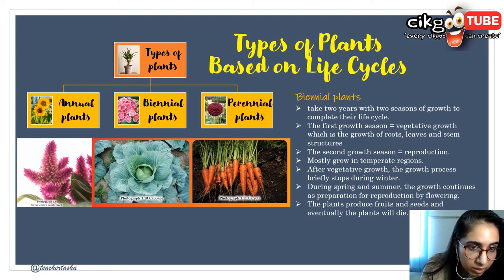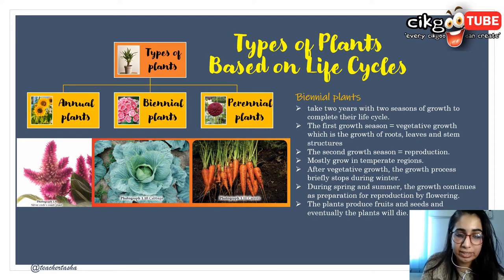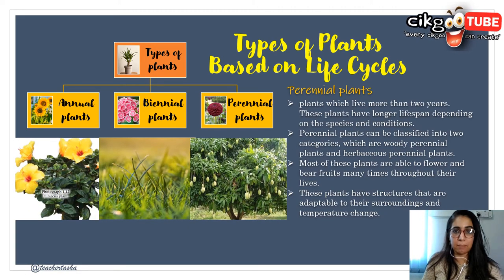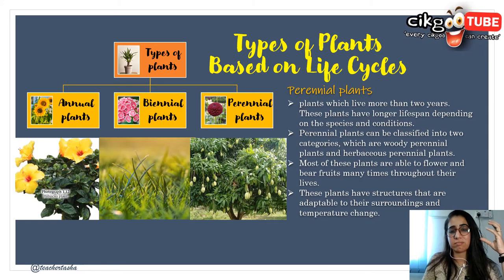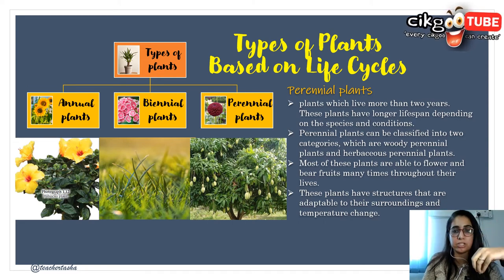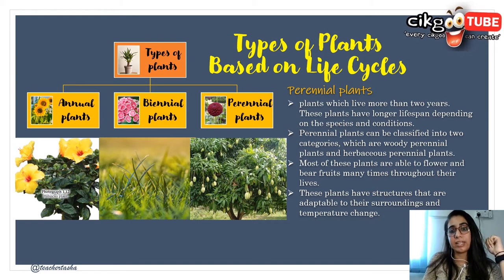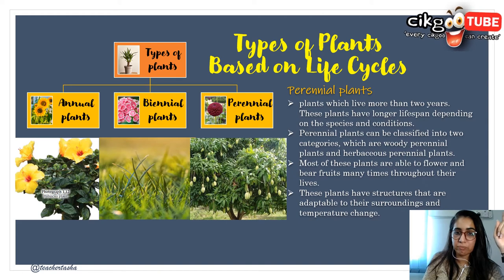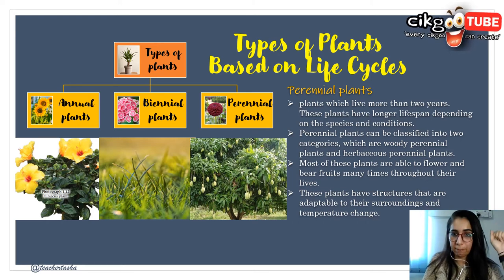Examples of biennial plants include the silver cockscomb plant, cabbage, and carrots. Perennial plants are plants that can live more than two years — they have a longer lifespan depending on the species and conditions. Perennial plants can be classified into two categories: woody perennial and herbaceous perennial. Most of these plants are able to flower and bear fruits many times throughout their lives, and they have structures adaptable to their surroundings and temperature changes. Examples include hibiscus, guava, and mango trees.